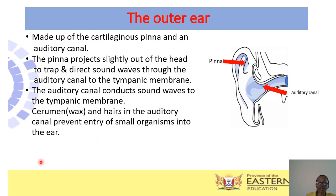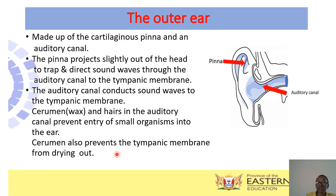The cerumen also lubricates your tympanic membrane, preventing it from drying out. The tympanic membrane marks the border between the outer ear and the middle ear, and it is lubricated by the cerumen so that it can function properly. The cerumen must not be too much within the canal — it must not block the canal or dry onto the tympanic membrane.